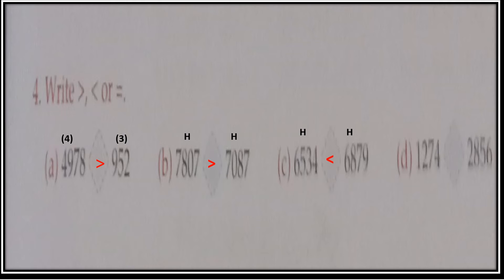Now Part D — 1, 2, 7, 4 and 2, 8, 5, 6. See the thousands place first: one number has 1 and the other has 2. Since 2 is greater than 1, so 2856 is greater than 1274.